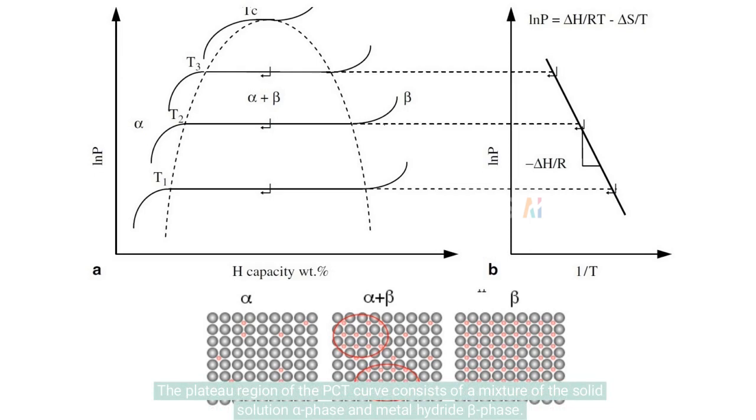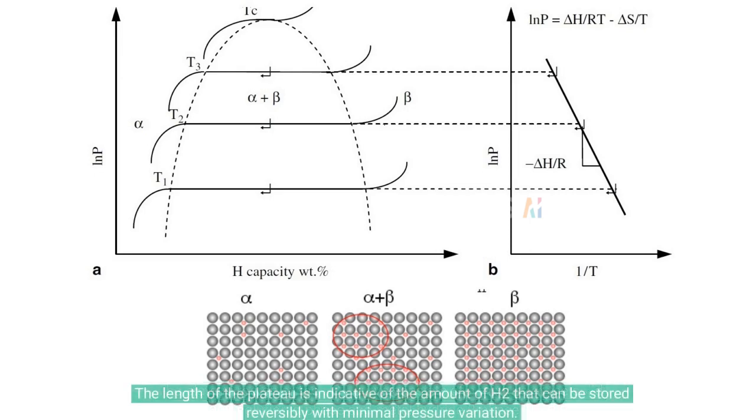The plateau region of the PCT curve consists of a mixture of the solid solution alpha phase and metal hydride beta phase. The length of the plateau is indicative of the amount of H2 that can be stored reversibly with minimal pressure variation.